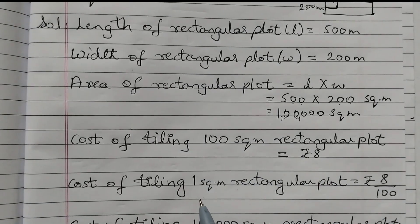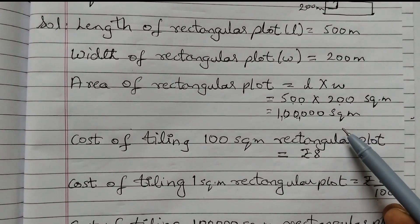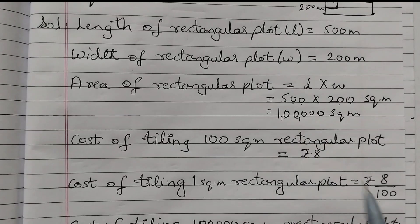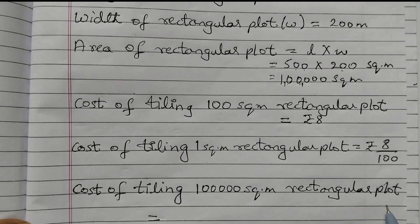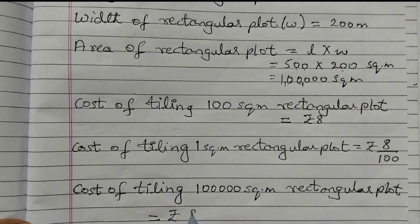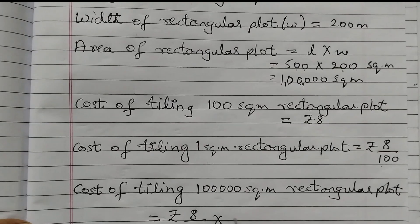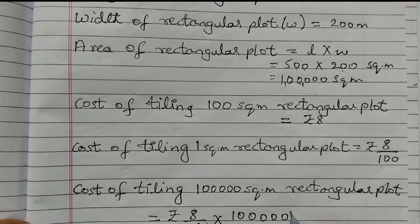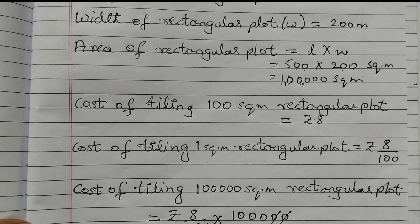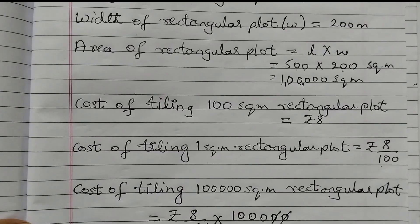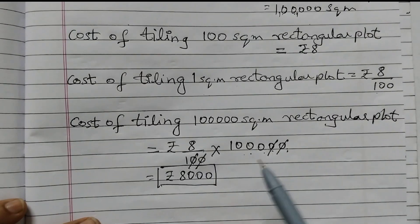Cost of tiling 1 square meter is 8 upon 100, so for the cost of tiling 1 lakh square meter, we multiply by 8 upon 100. That gives us rupees 8 upon 100 into 1 lakh — which is 1 followed by 5 zeros. We cancel 2 zeros from the 100 against 2 zeros in 1 lakh, leaving 1000. So 8 into 1000 is 8000. The answer is rupees 8000.